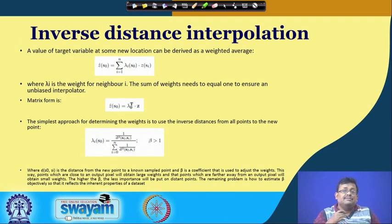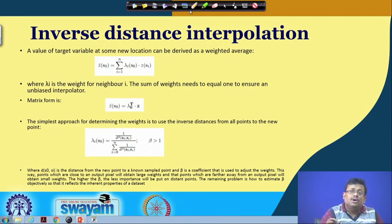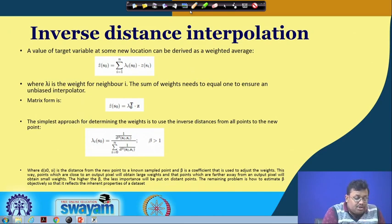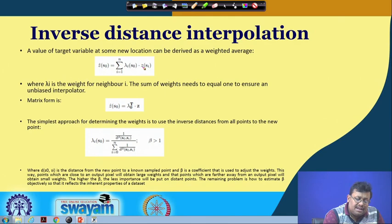Inverse distance interpolation — IDI or IDW — is an important mechanical model for interpolation. A value of the target variable at some new location can be derived as a weighted average, just like the estimator expressed as a summation of individual weights lambda-i times ti, as we discussed in previous slides.